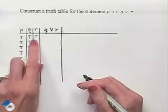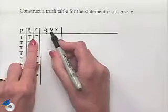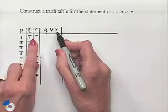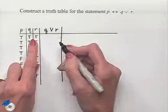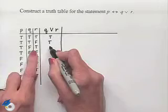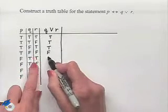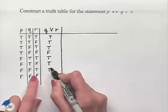We can fill this in by looking at our column two and column three. This is an OR statement, which will be true as long as one part is true. So we're going to have true, true, true, false, true, true, true, false.